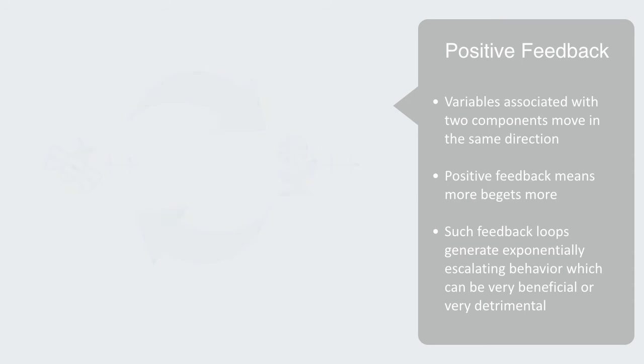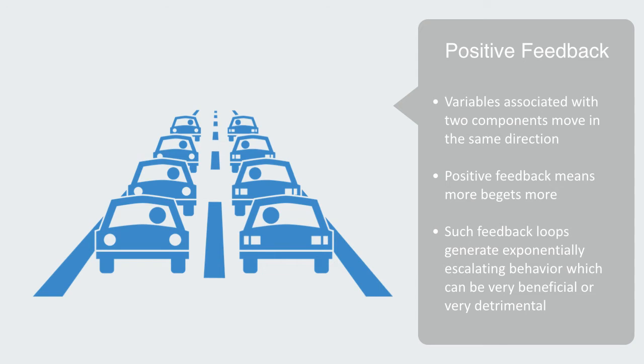Traffic jams are another example of positive feedback loops. The more cars that join the traffic jam, the slower it will move. The slower it moves, the more cars that will join, and thus more begets more.